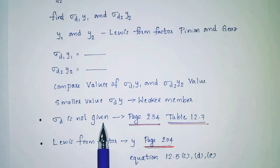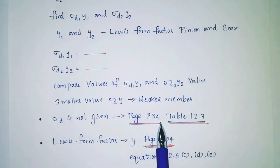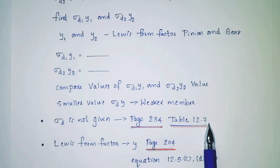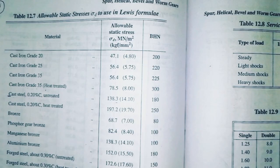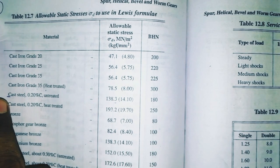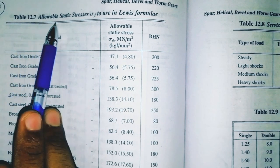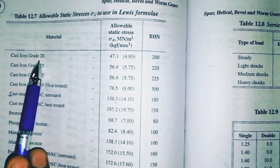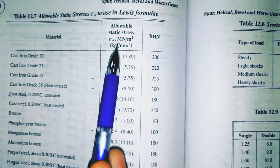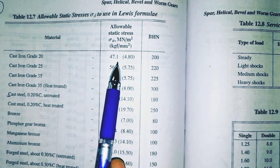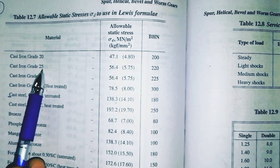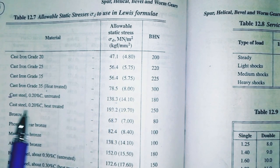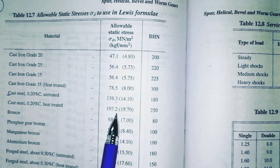Sigma d1 is not given, so refer to page number 234 table 12.7 for allowable static stress by material. Cast iron grade 20 is 47.1, cast iron grade 25 is 56.4, and cast steel is 193.2.